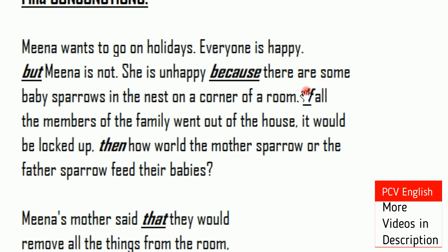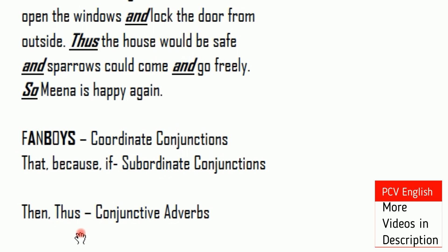In summary: we covered Subordinating Conjunctions, Conjunctive Adverbs, and Correlative Conjunctions. Correlative Conjunctions include pairs like: Neither...nor, Not only...but also.